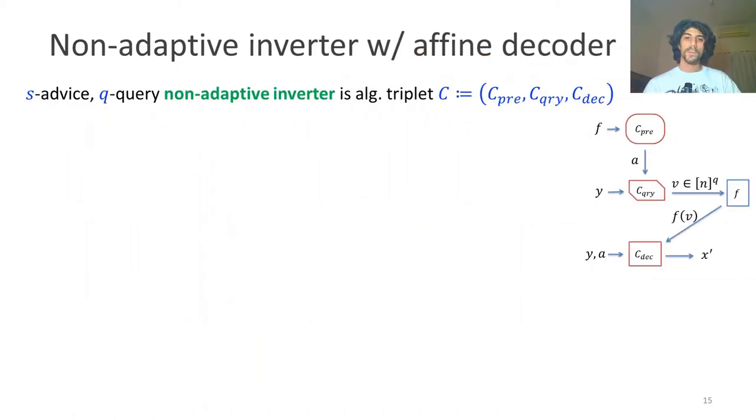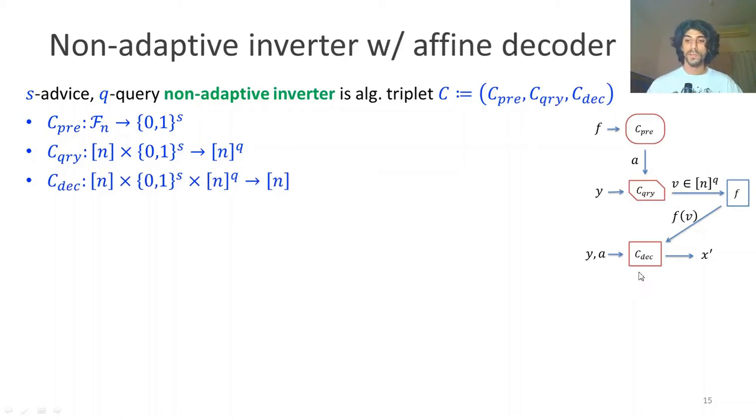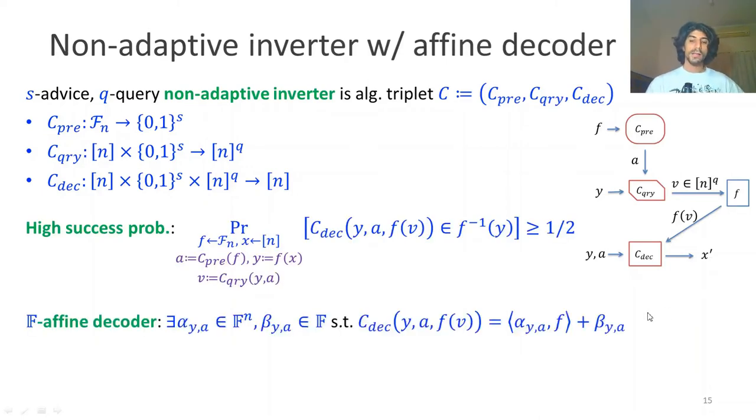Our next result pertains to non-adaptive inversion, and this time the constraint lies on the decoder phase, not the preprocessor. Let's formulate non-adaptive inversion. Here we use a triplet of algorithms: preprocessor, query selector, and decoder. The preprocessor receives the function and outputs an advice string. The query selector receives the advice string and the element we wish to invert, and outputs a series of queries which are then given to the decoder. The decoder is given the advice string and the element to invert, and in conjunction with the query results must output an answer.